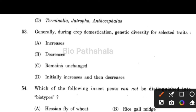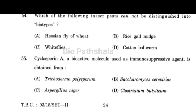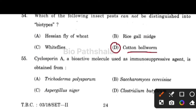Next question: which of the following insect pests cannot be distinguished into biotypes? That is option number D — cotton boll worm. Next question: cyclosporin A, a bioactive molecule used as an immunosuppressant, is obtained from Trichoderma polysporum.